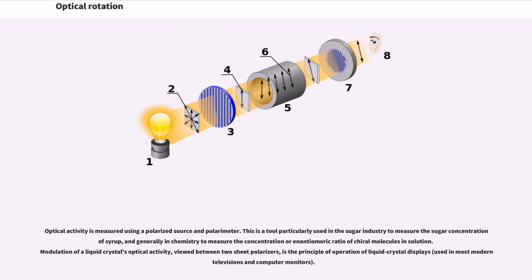Optical activity is measured using a polarized source and polarimeter. This is a tool particularly used in the sugar industry to measure the sugar concentration of syrup, and generally in chemistry to measure the concentration or enantiomeric ratio of chiral molecules in solution. Modulation of a liquid crystal's optical activity, viewed between two sheet polarizers, is the principle of operation of liquid crystal displays.